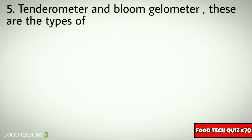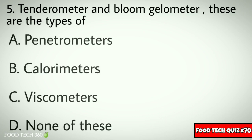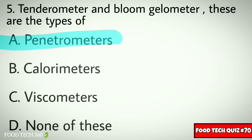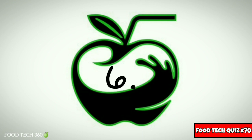Q5. Tenderometer and Bloom Gelometer — these are the types of which instrument? Options: A. Penetrometer, B. Colorimeters, C. Viscometers, D. None of these. Correct answer: A. Penetrometer.